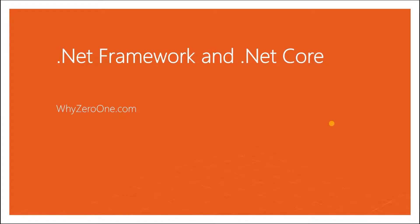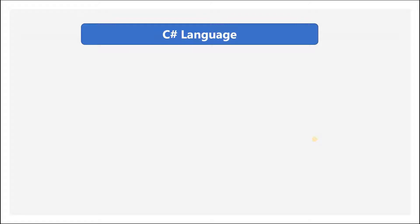Welcome to OIS01. Today we will look into the .NET framework and .NET Core. We are learning C# language, which is the language we will use to write programs. But writing a program is not enough — we also need to compile and run it. We need a platform, a runtime or framework, that can communicate our code to the system.